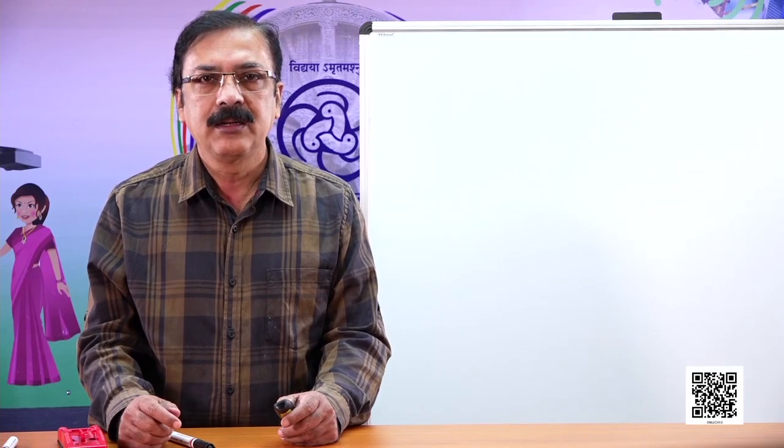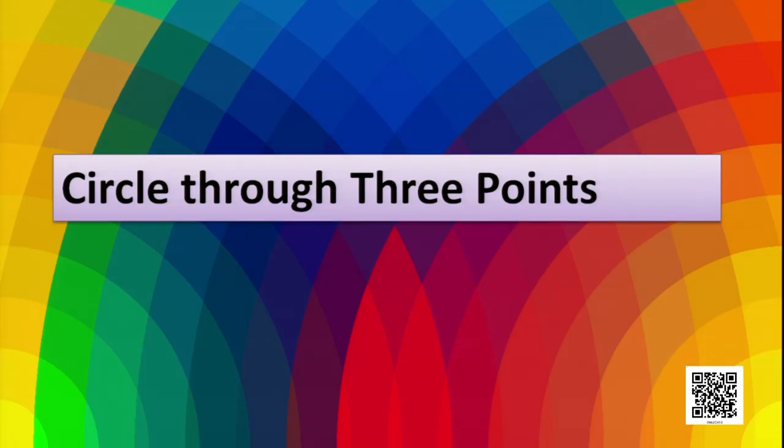Welcome dear students to this session. Today we are going to discuss from class 9 mathematics book chapter 10 on circles, part 4. Here we will discuss about a circle through three points, that is three non-collinear points.